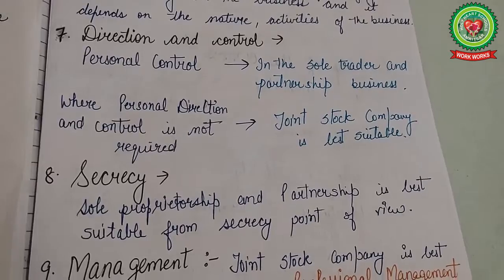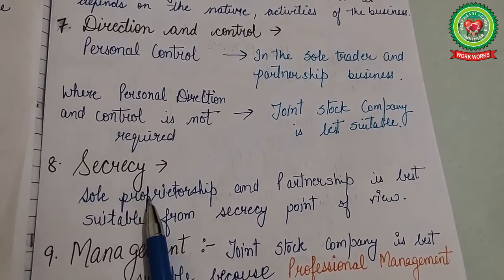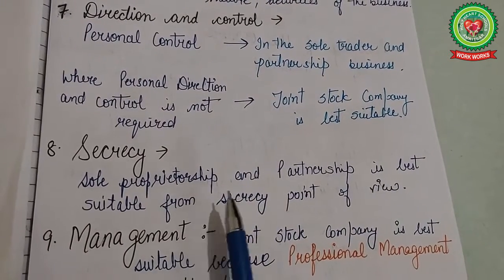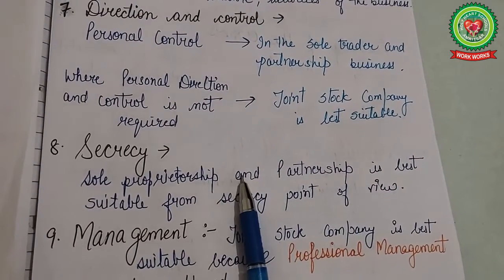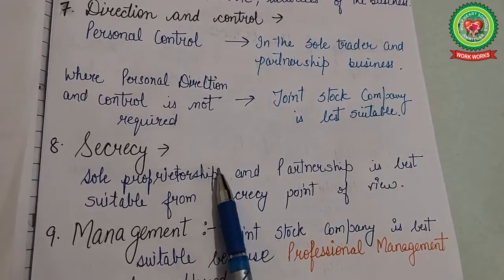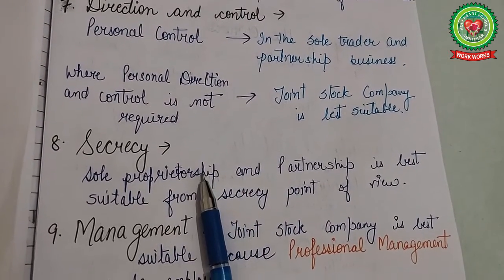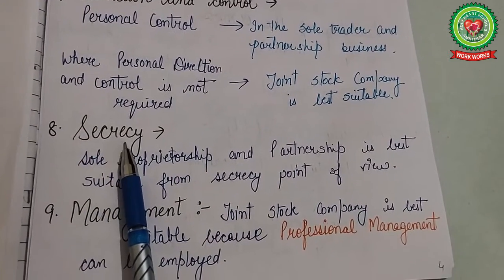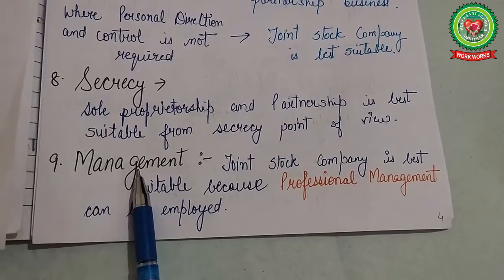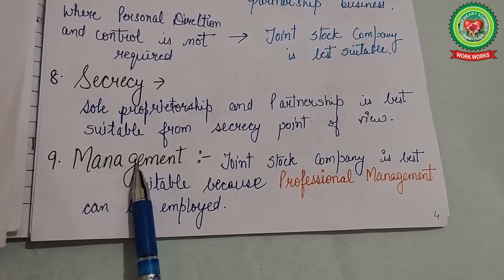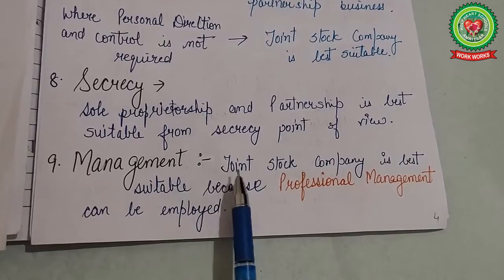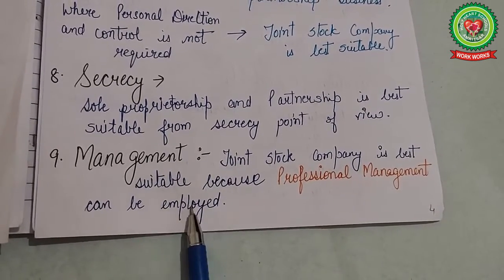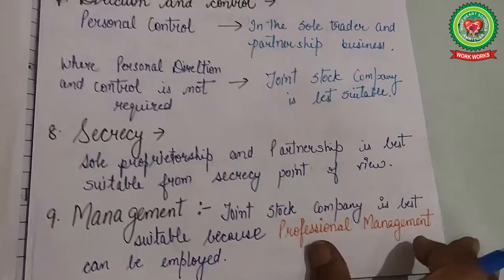The next factor is secrecy. The success of a business mainly depends on maintaining secrecy. Sole proprietorship and partnership are best suited from the secrecy point of view, but it is very difficult to maintain secrecy in the company form of business. For management, the joint stock company is best suited because professional management can be employed in this type of business.